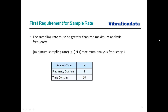We have two requirements for sample rate, and we need to fulfill both. The first is that the sample rate must be greater than or equal to n times the maximum analysis frequency — our maximum frequency of interest. For frequency domain analysis such as a Fourier transform, FFT, waterfall FFT, or power spectral density, this n value must be at least 2, based on Shannon's sampling rule. Some reference sources recommend being more conservative with n equal to 2.5.